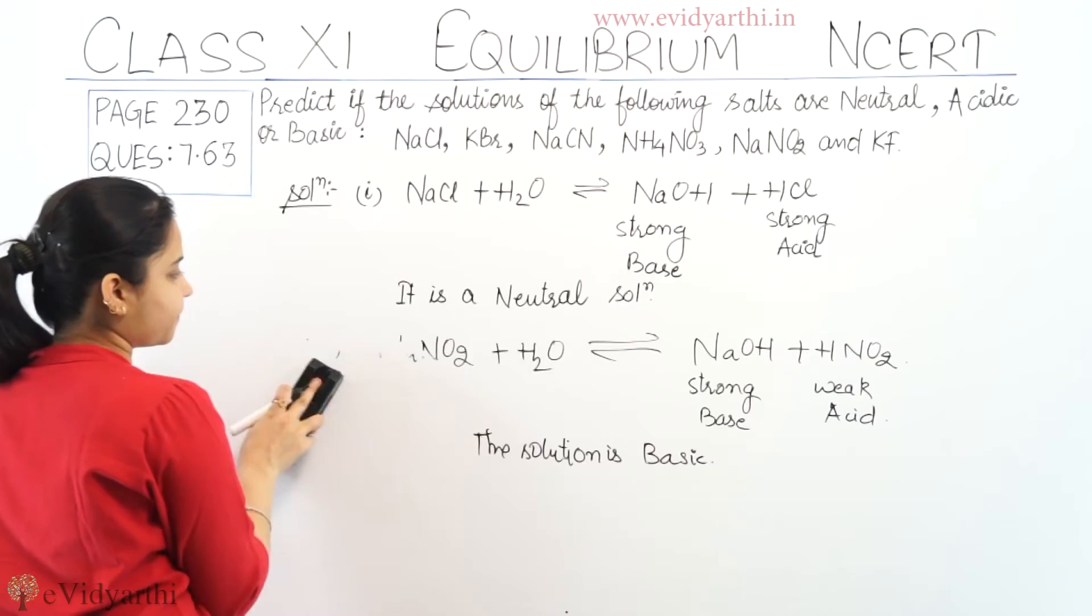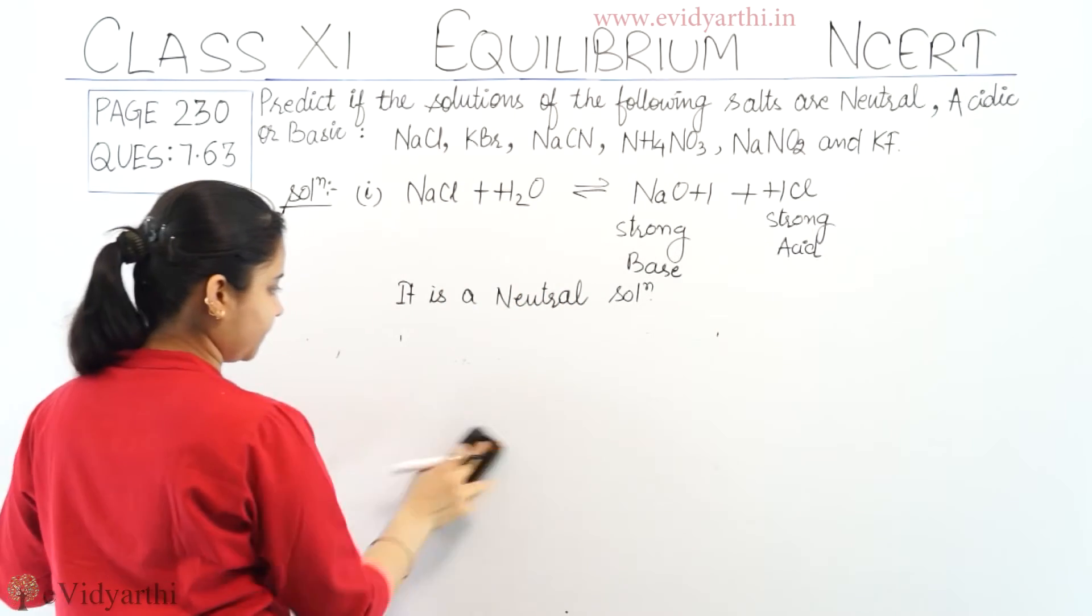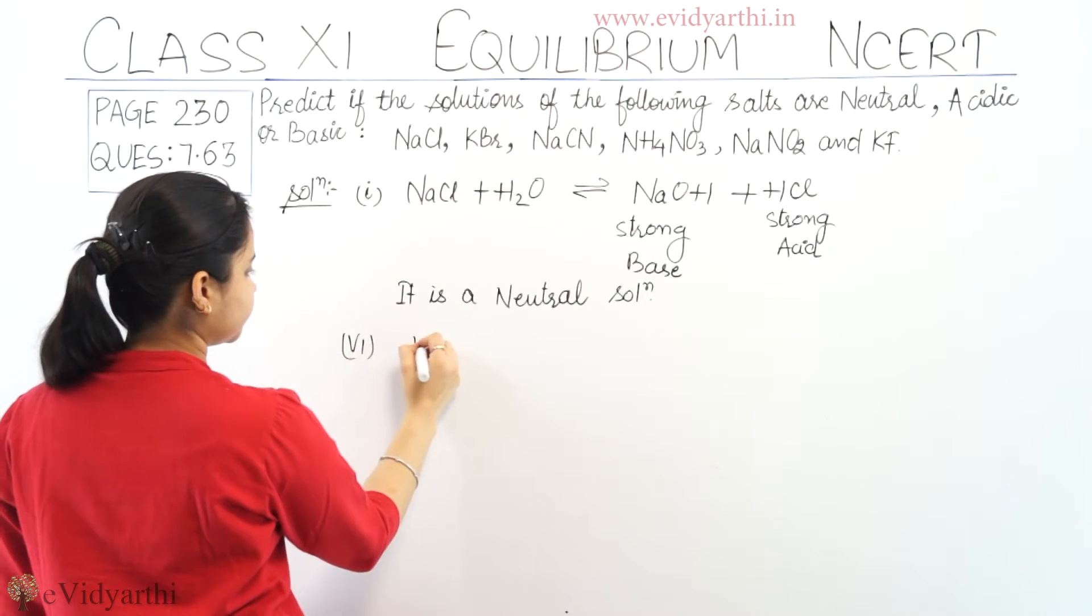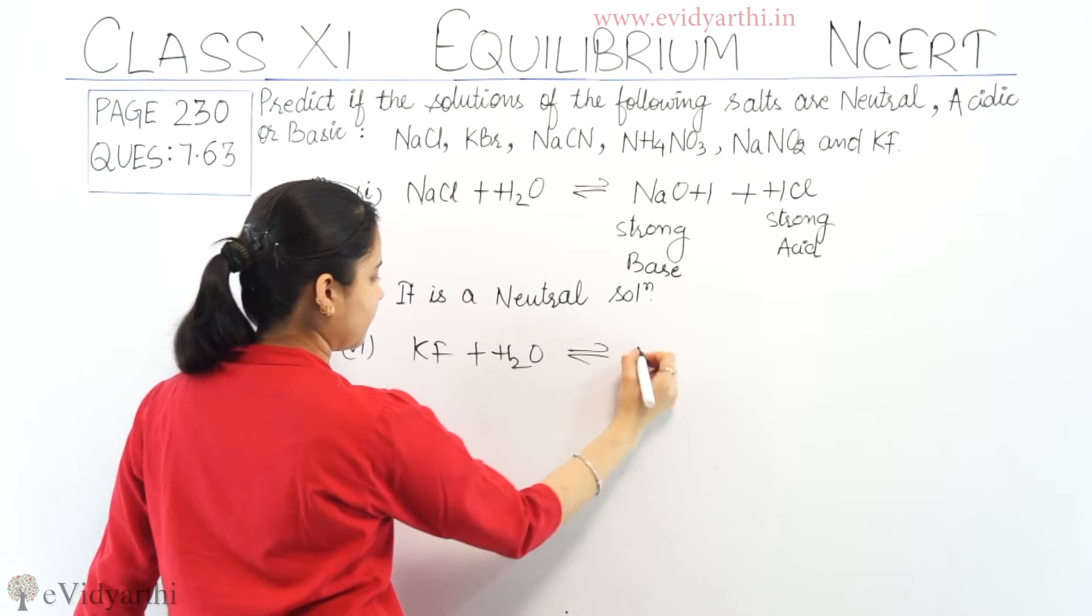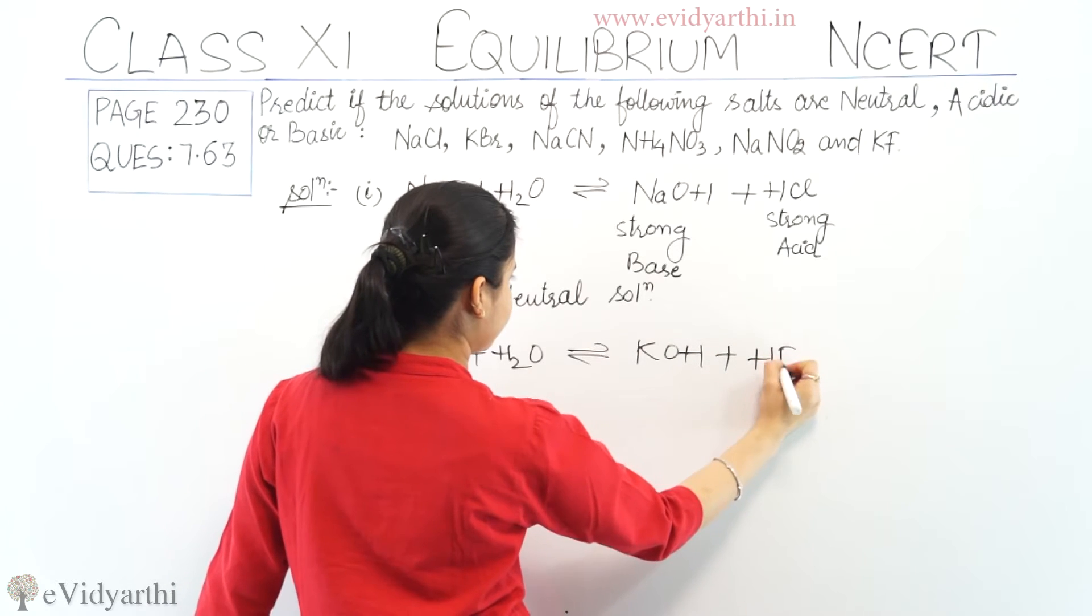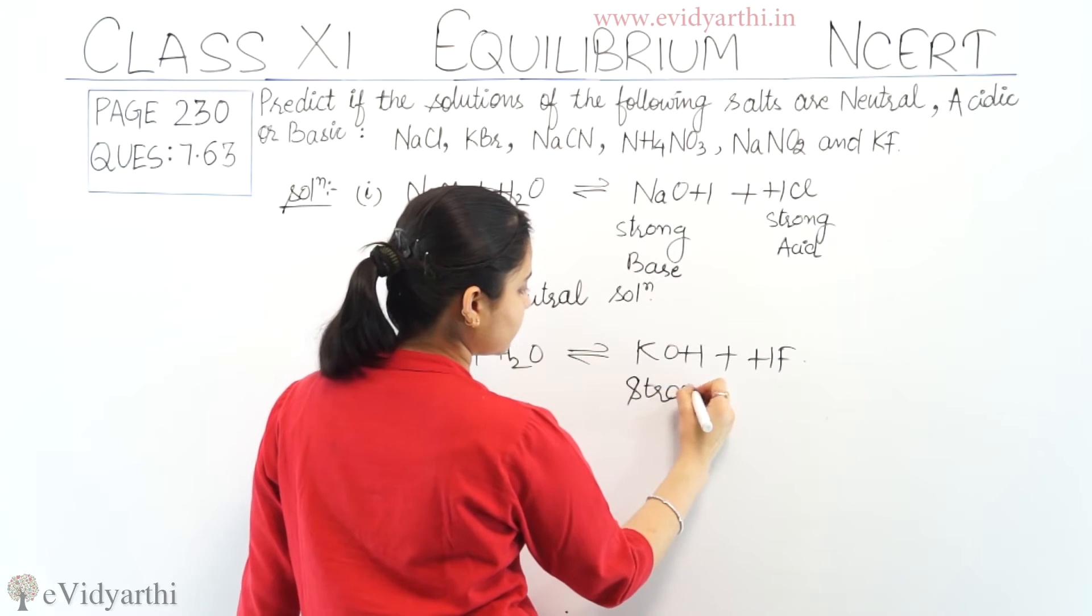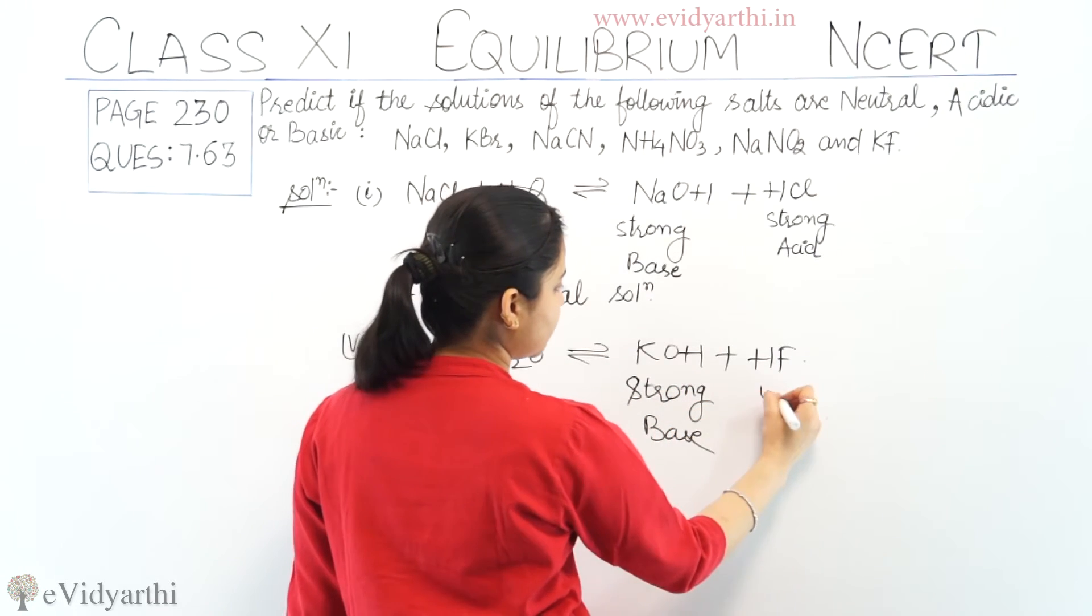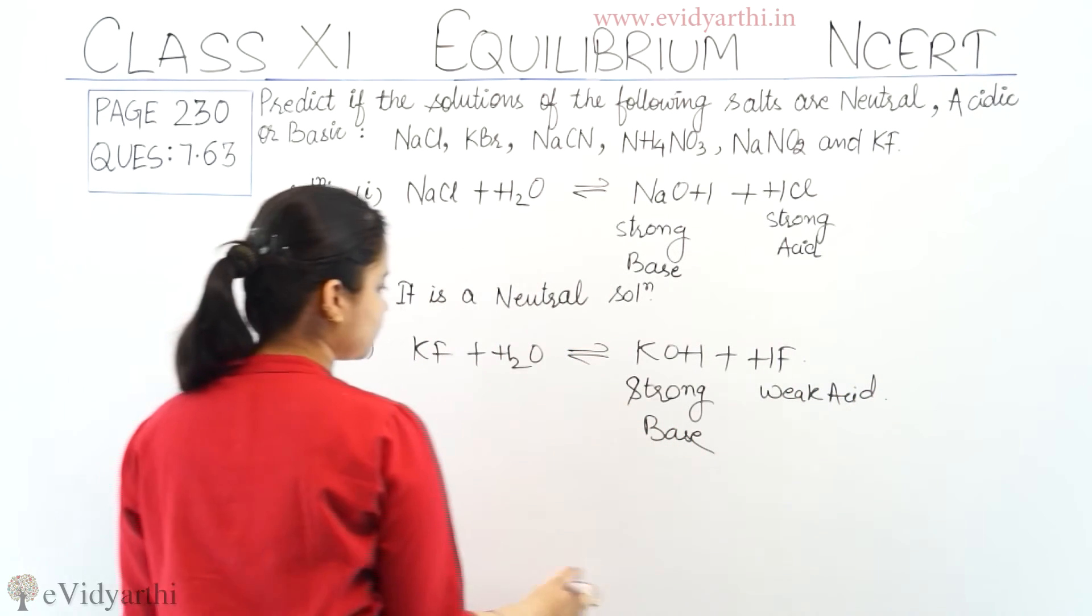Coming to the last part, KF. KF plus water gives KOH plus HF. KOH is a strong base and HF is a weak acid. Hence, the solution is basic in nature.